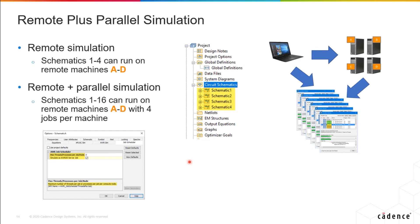For another example, say you wanted to run multiple schematics — not just an optimization, but four schematics, each taking five minutes. To get things done faster, you can run them on remote machines A through D: schematic one goes to A, two to B, three to C, etc. That would run considerably faster. And if you had 16 schematics and wanted to run them all at the same time, you could send them to A, B, C, and D and have them run in parallel on each. There's a graphic here showing how you might set that up in AWR.